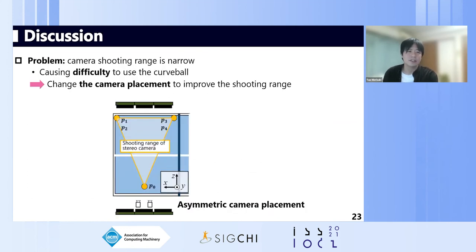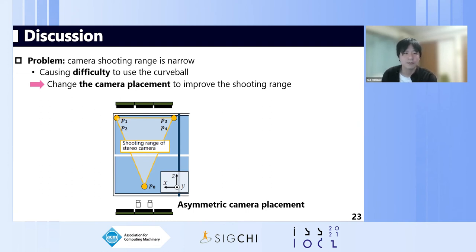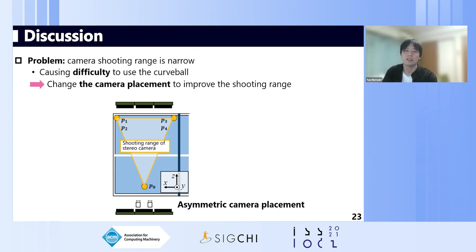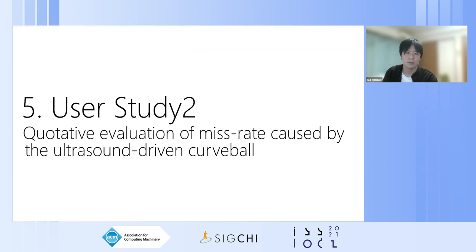This problem was caused by the camera's very narrow shooting range, which made it difficult to use the curveball system effectively. In the future, we plan to change the camera placement to improve the shooting range — for example, adding more cameras or placing the high-speed camera overhead to cover the full play area.